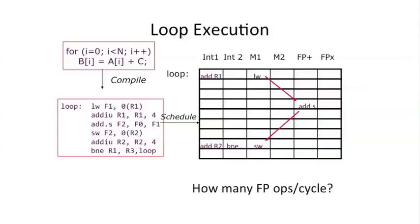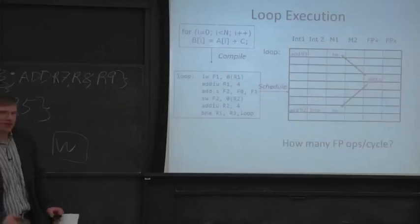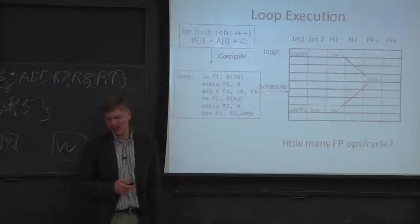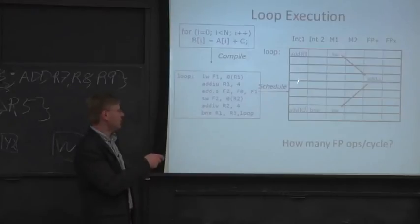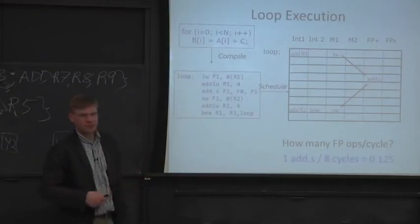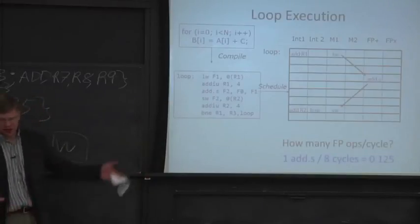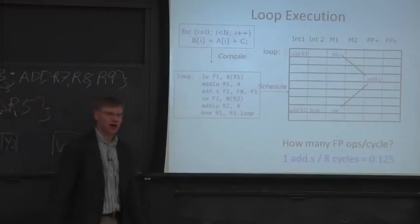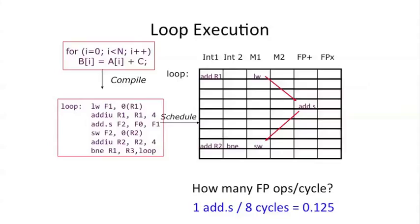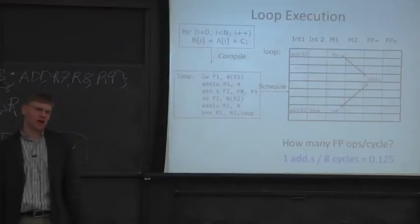OK, so first question here. How many floating point operations are we doing per cycle? Are we doing very well here? This looks pretty poor. We have one floating point operation here, just this add, and we have one, two, three, four, five, six, seven, eight cycles. So we're having 0.125 floating point operations per cycle. It's not that great. We do have some parallelism. We're executing three instructions here. It's better than nothing, but we're not really using the machine very well.